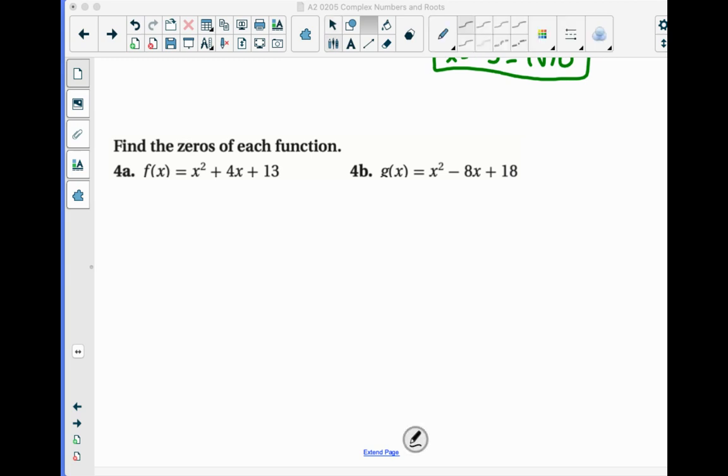All right, here we go. Set it equal to zero. Got to move that 13 over there. So we'll have to subtract it. So x squared plus 4x, leave a little space, equals negative 13.